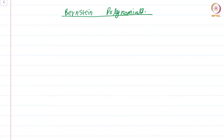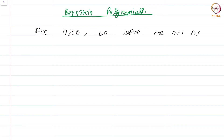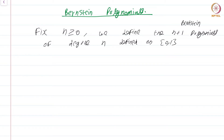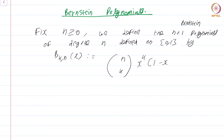In this module, let us talk about the basic properties of Bernstein polynomials. We begin with what these polynomials are. Fix n greater than or equal to 0. We define the n plus 1 Bernstein polynomials of degree n, defined on 0,1, by b_{k,n}(x) equal to n choose k times x to the power k times 1 minus x to the power n minus k, for k equal to 0, 1, 2, up to n.